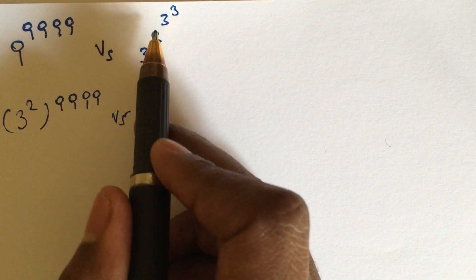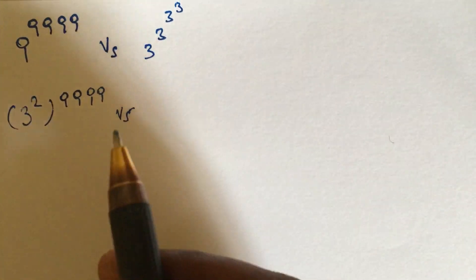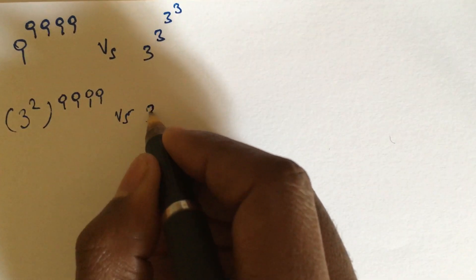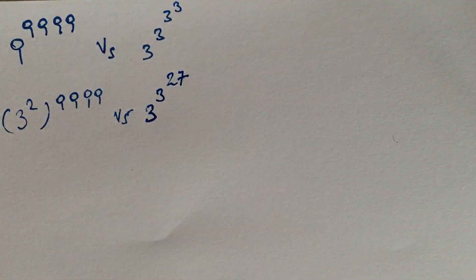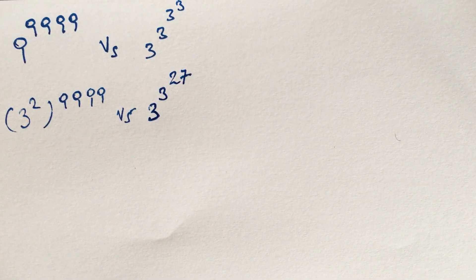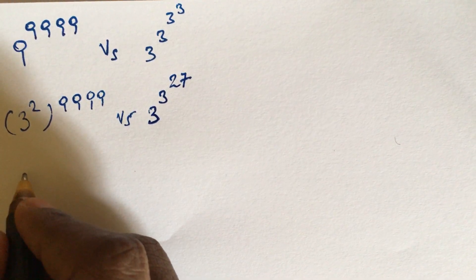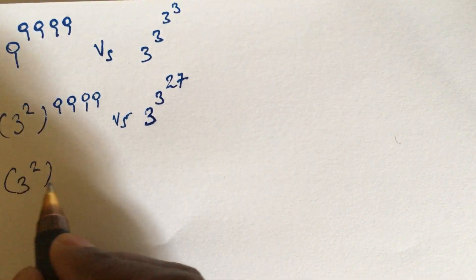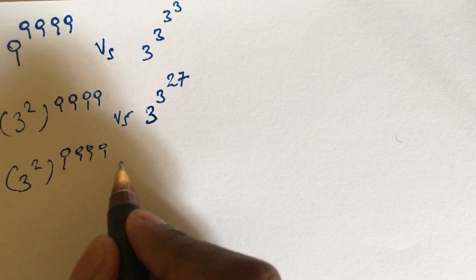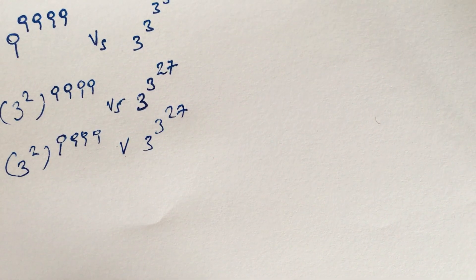3 cubed equals 27. So 3 to the power of 3 equals 27. Next, we rewrite: 9 equals 3 squared, so we now have 3 squared to the power of 9^9^9, versus 3 to the power of 3 to the power of 27.